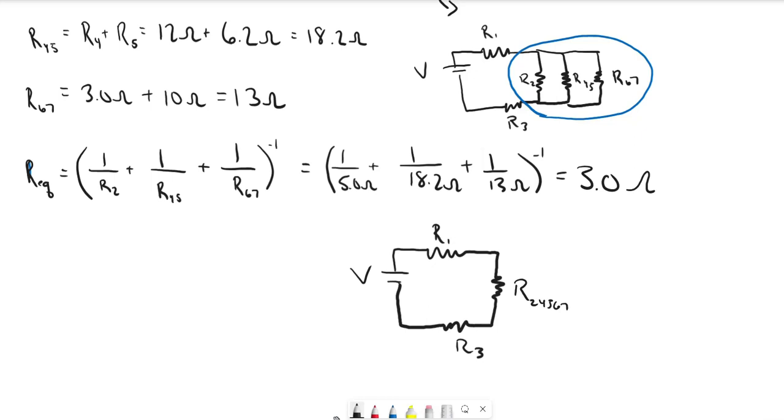So now we just have to add these resistances together because they are in series. And this is the R equivalent for the whole circuit. That's R1 plus R2,4,5,6,7 plus R3.